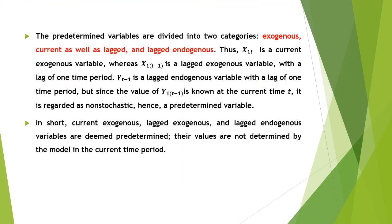Predetermined variables are divided into two categories: exogenous variables and lagged endogenous variables. Exogenous variables are again divided into current exogenous variables and lagged exogenous variables. Thus, x1t is a current present-time exogenous variable, whereas x1t-1 is a lagged exogenous variable with a lag of one time period. yt-1 is a lagged endogenous variable with a lag of one time period. Since the value of yt-1 is known with certainty at current time t, it is regarded as non-stochastic — hence a predetermined variable. In short, current exogenous, lagged exogenous, and lagged endogenous variables are deemed to be predetermined variables.